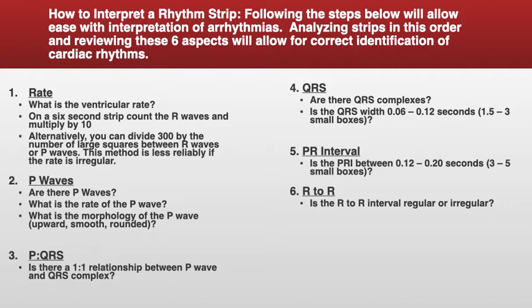Last is your R to R. When we say R to R, you're looking for regular or irregular. Do the R waves look consistently the same length apart from each other? If they are, that's going to be considered a regular rhythm. If the distance between the R waves is inconsistent, then that's considered irregular.